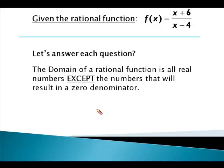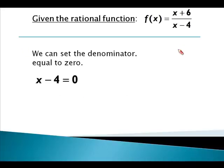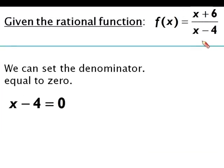So it's important to note that the domain of a rational function is all real numbers except the numbers that will result in a zero denominator. If you look at our rational function, our denominator is x minus 4, so you ask yourself what values of x will result in a zero denominator.